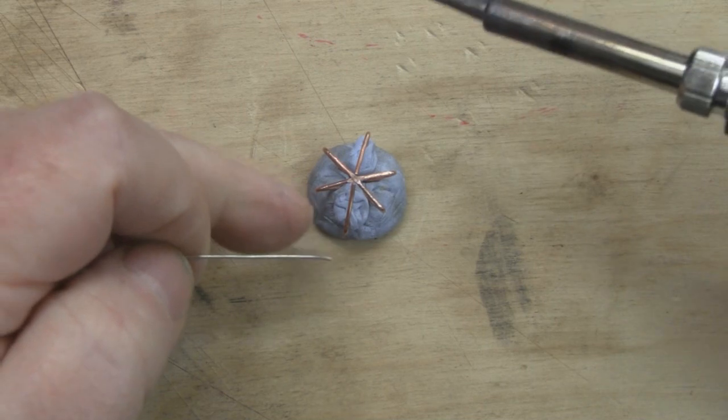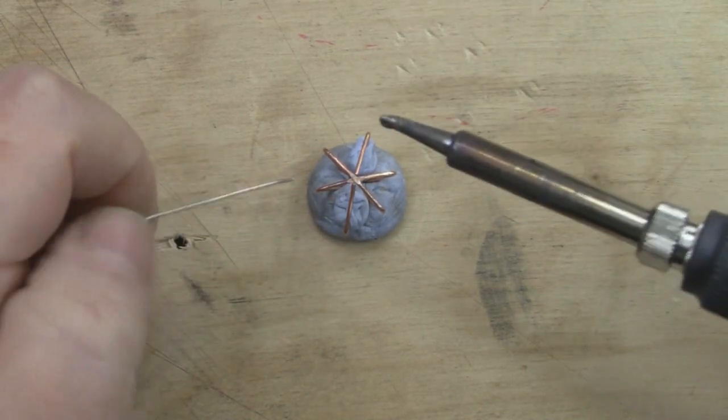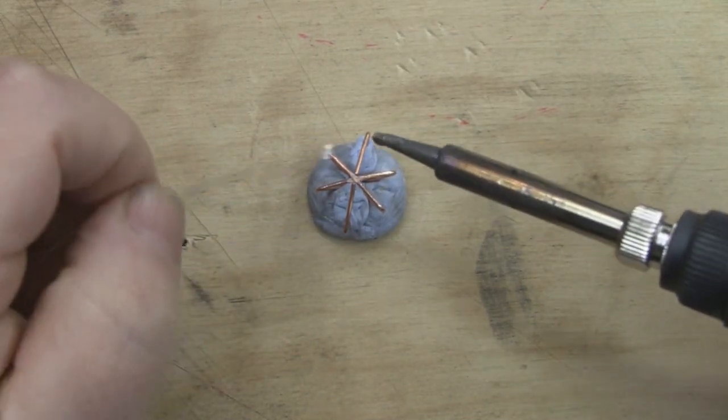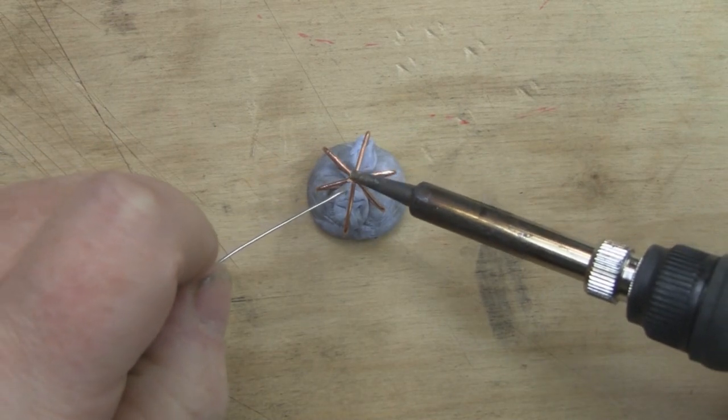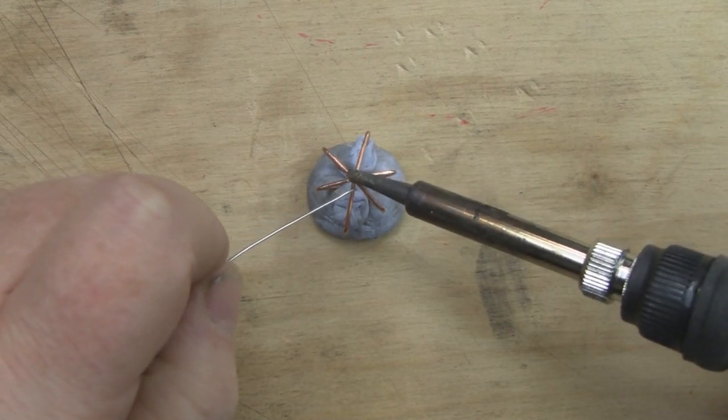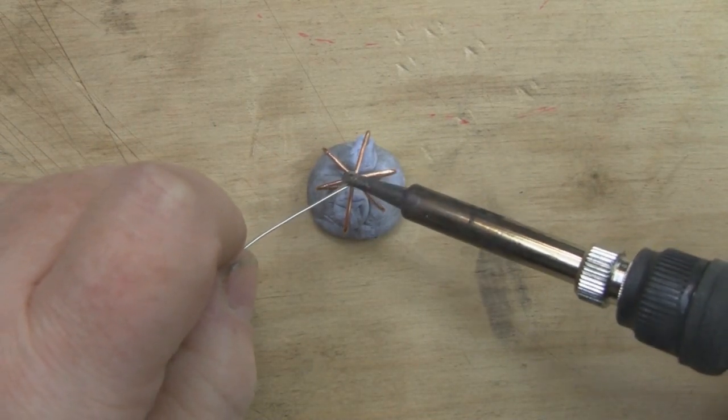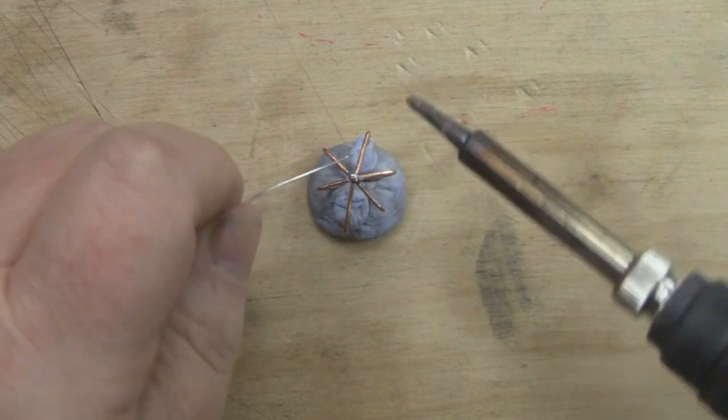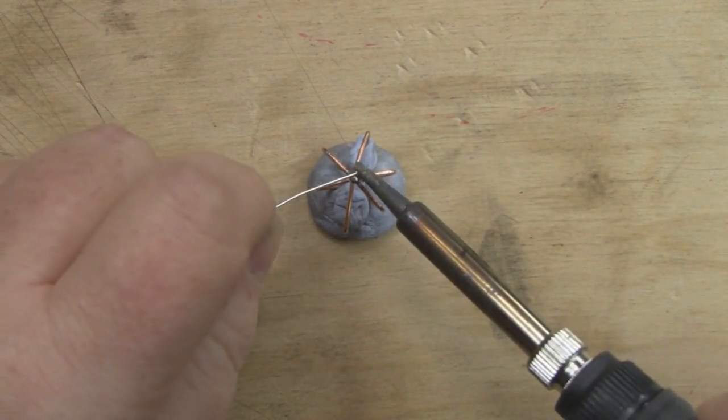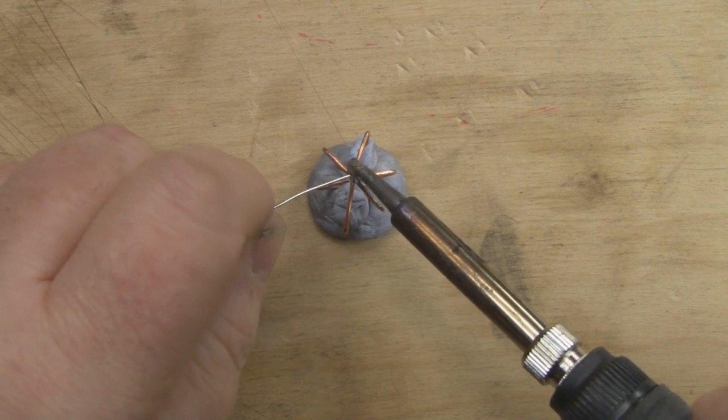I want to do this quite quickly because I don't want to melt the blue tack too much. Get in there, flow some solder into that join, make sure you get plenty of solder flowing on all those joints.